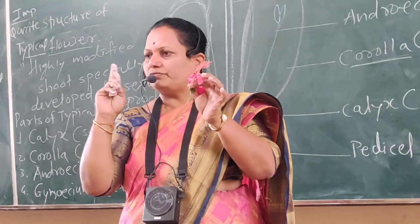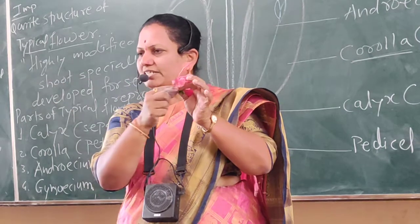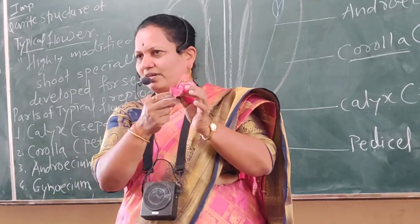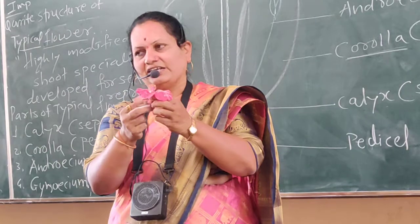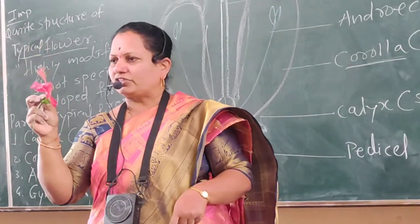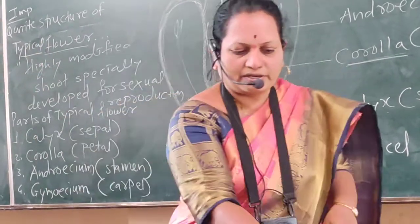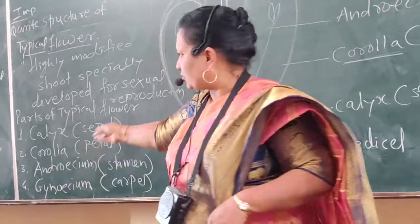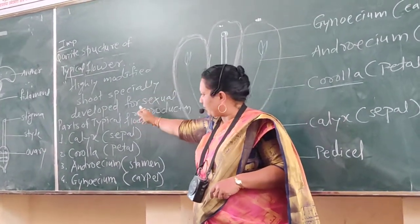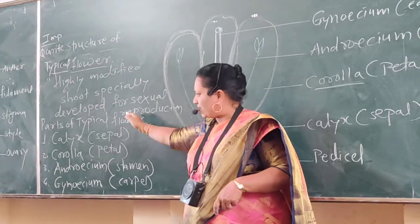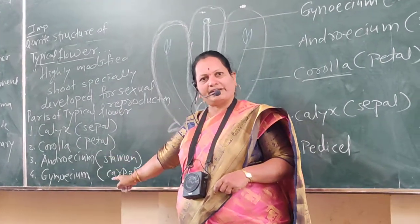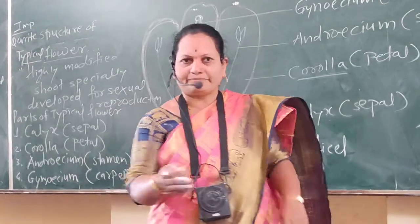Which are the essential whorls? Androecium and gynoecium. Accessory whorls: calyx and corolla. What is the main function of the flower? Production of fruit. Definition of flower: a highly modified shoot specially developed for sexual reproduction. Parts of flower: calyx, corolla, androecium, gynoecium.